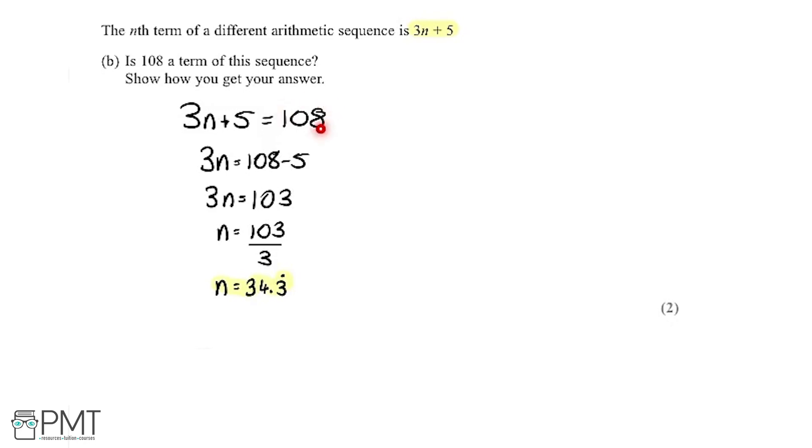Okay, so if we just have a think for a second, the way we get 108 as a term is if we sub n to be 34.3 recurring. So this shows that 108 isn't a term in the sequence. This is because we know n could only be 1, 2, 3, 4, 5, and so on. You can't have any decimal numbers like this.